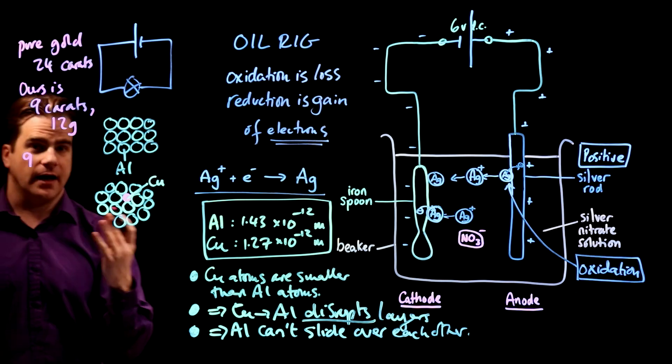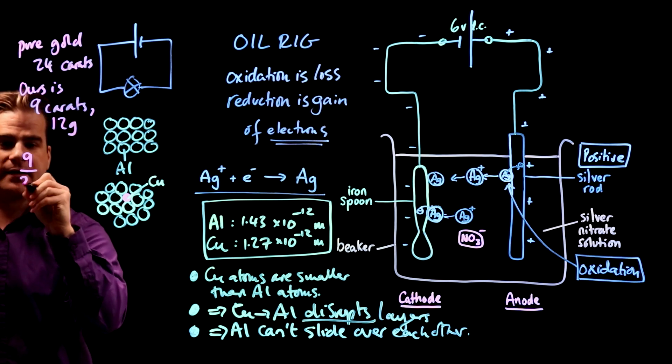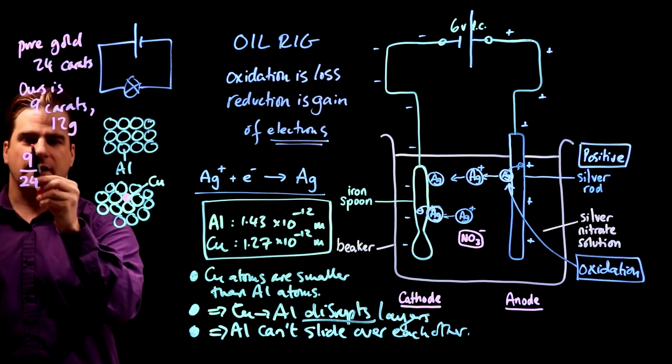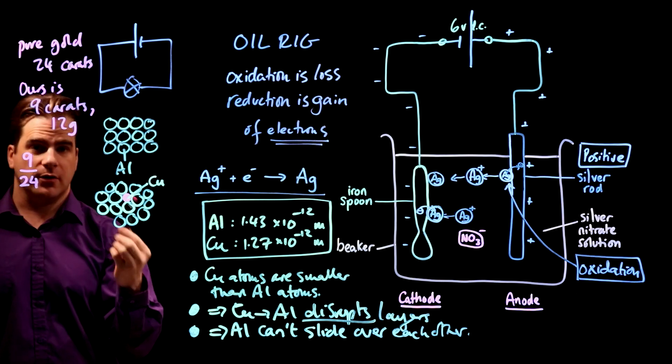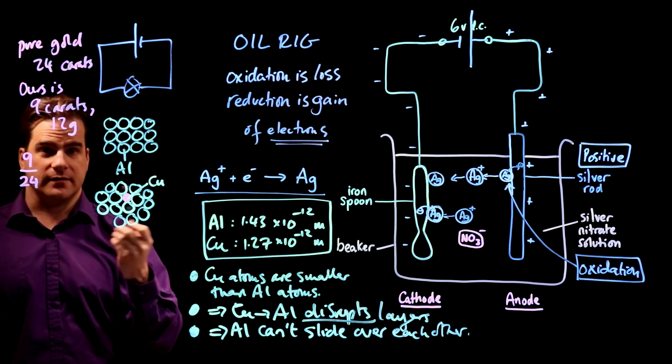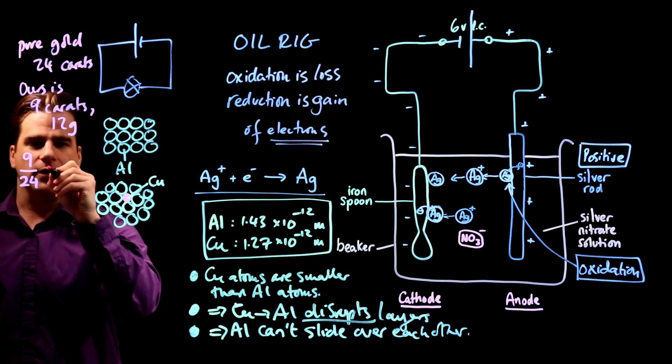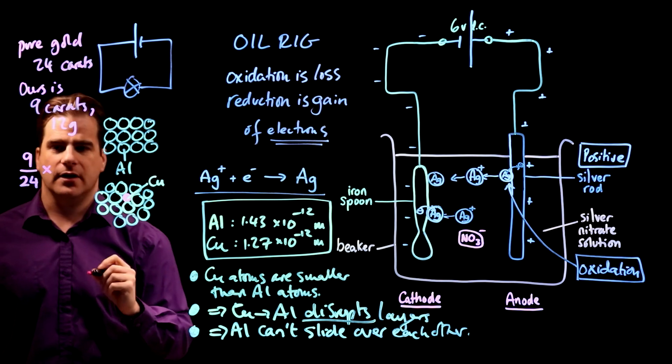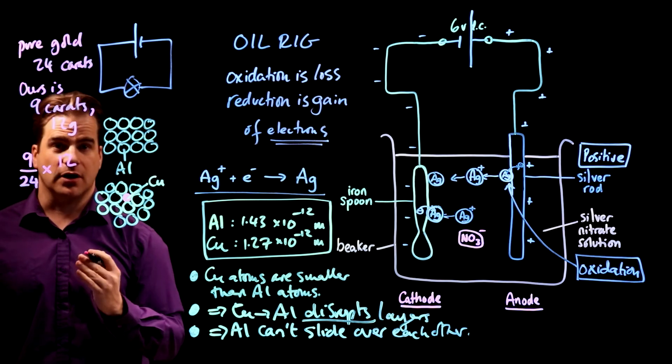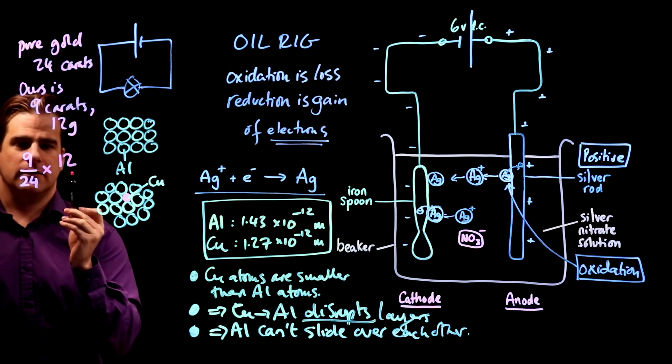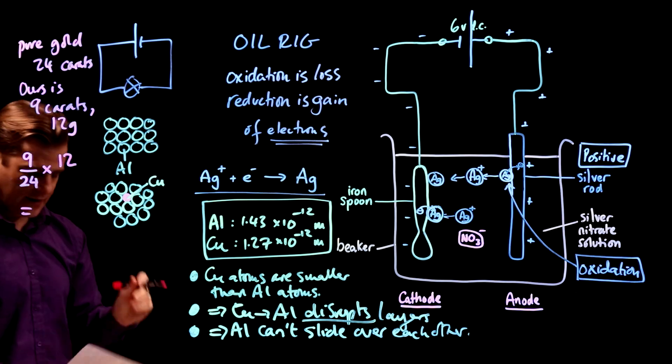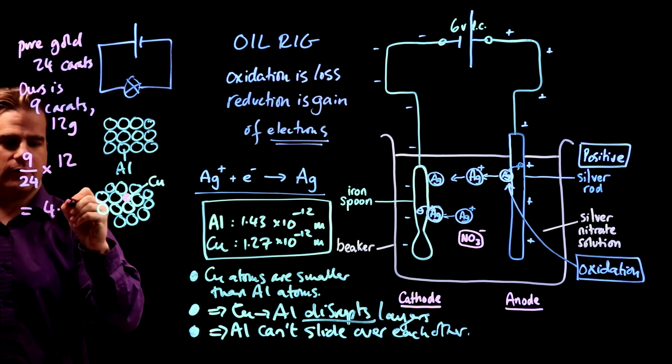So our ring is nine carat gold ring. So it's nine carats out of a maximum possible of 24 carats. That's the proportion of pure gold in our ring. So in other words, nine 24ths of our ring is gold. So nine 24ths of, translated to math means times. So nine 24ths of the whole thing, which is 12 grams. That's how much gold there is in our ring. So nine, that's it. Nine 24ths of our ring is gold. Stick it in the calculator and you get 4.5 grams. Makes sense.